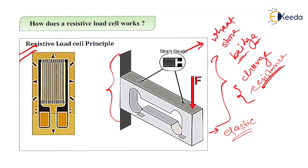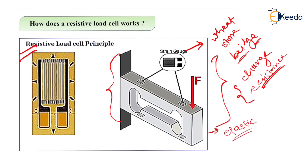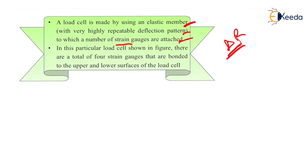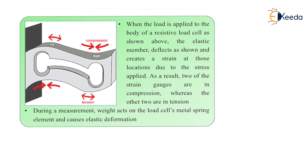When force is applied to the load cell, it deflects the resistive load cell to which strain gauges are attached. In this particular load cell, there are a total of four strain gauges bounded to the upper and lower surfaces. These four strain gauges are responsible for giving us the change in resistance. When the force is applied, deformation takes place in the load cell.